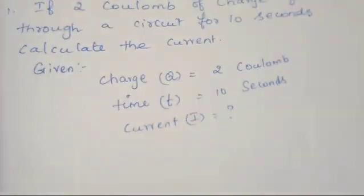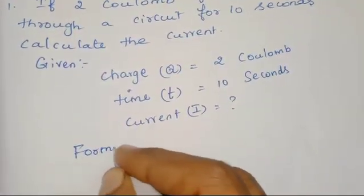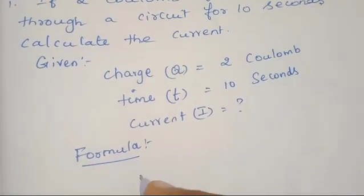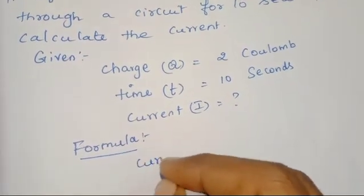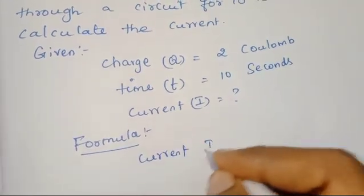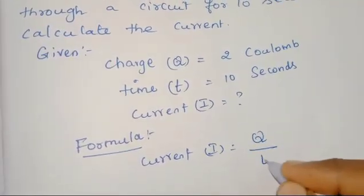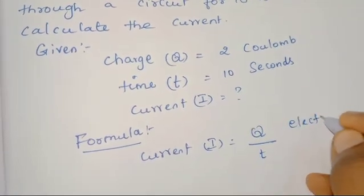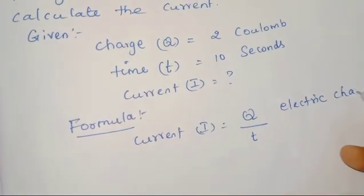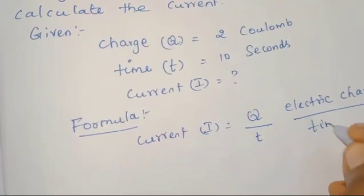In physics, we write the formula next. We have already learnt the formula of electric current from lower classes. So, current symbol I is equal to charge divided by time — we can say electric charge divided by time.